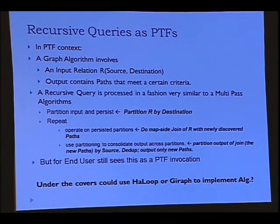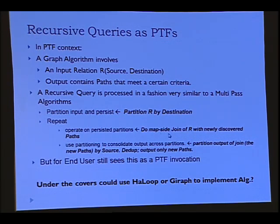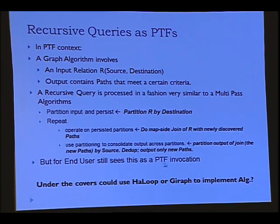What does this have to do with PTFs? The naive way is this fits very well into the multi-pass PTF framework. On the map side, we do a map-side join to discover new paths. On the reduce side, we remove duplicate paths, so at the end of a pass we only have new paths discovered. From a PTF perspective, the interface doesn't change. From an implementation perspective, our implementation may not be the most efficient — what we want is to still expose the same interface but use HALOOP or Giraffe to implement these algorithms under the covers.